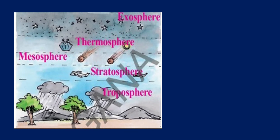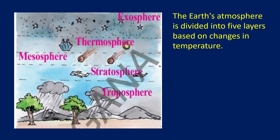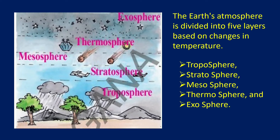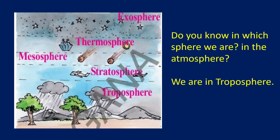Our earth's atmosphere is divided into 5 layers based on changes in temperature. The first one is troposphere. The second one is stratosphere, where jet planes will run. The third one is mesosphere. The fourth one is thermosphere. The fifth one is exosphere. All biotic and non-biotic life is present in the troposphere. Air is present in this atmosphere, so all living organisms are present in the troposphere. We are in troposphere because air is present here.